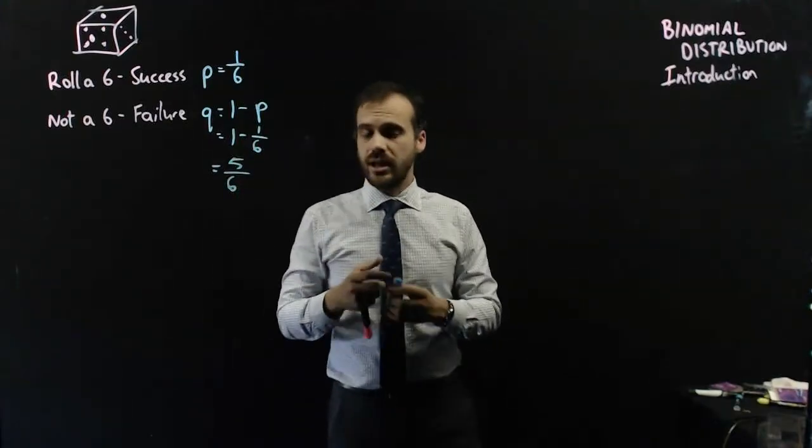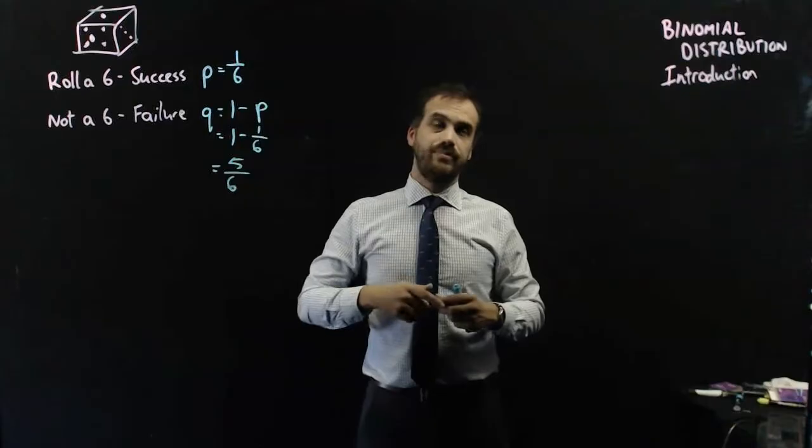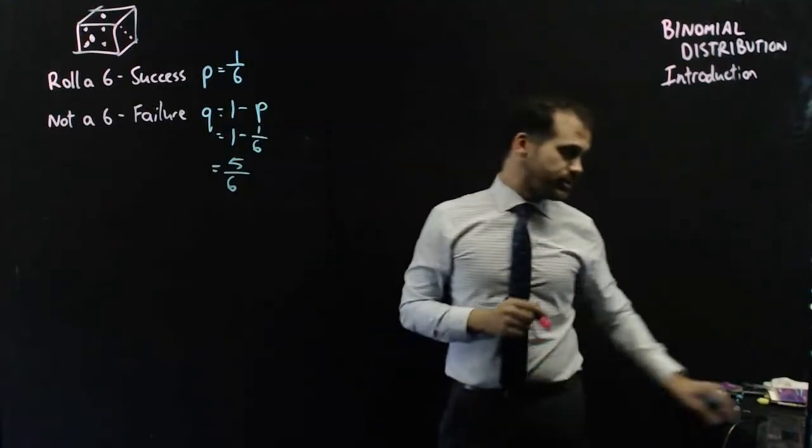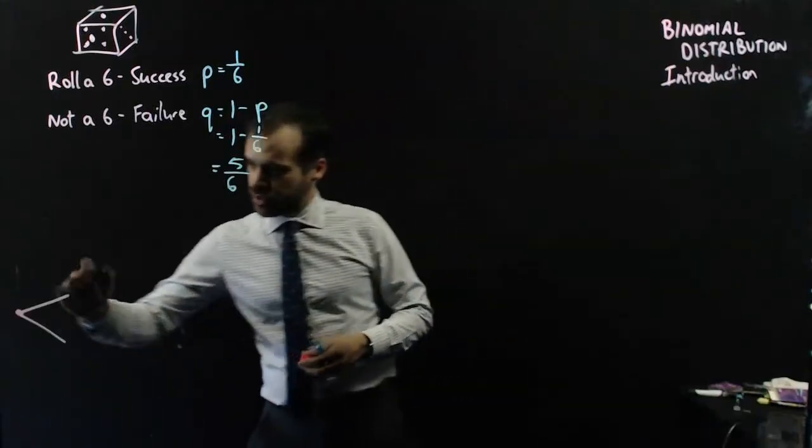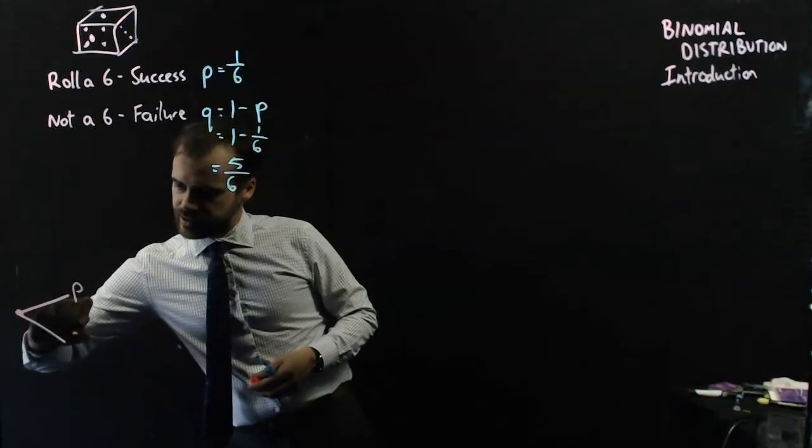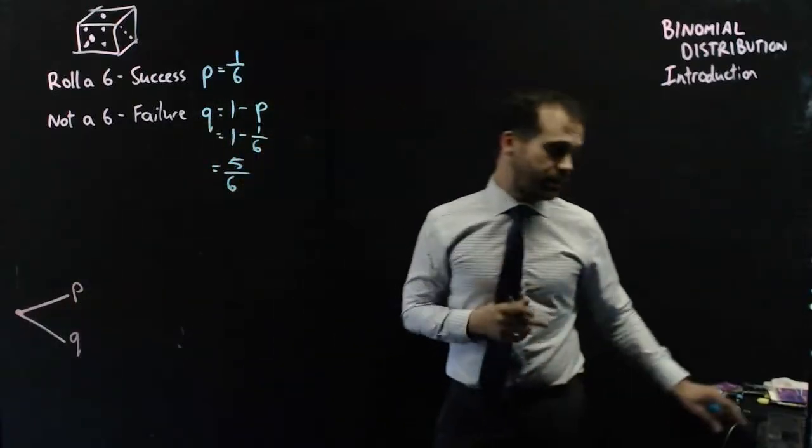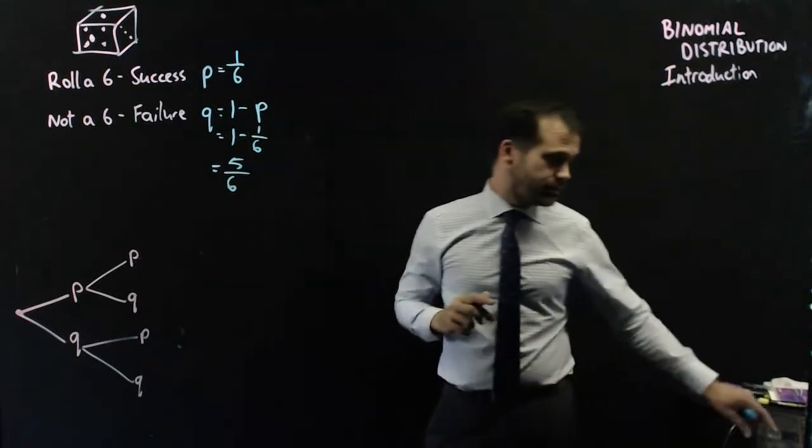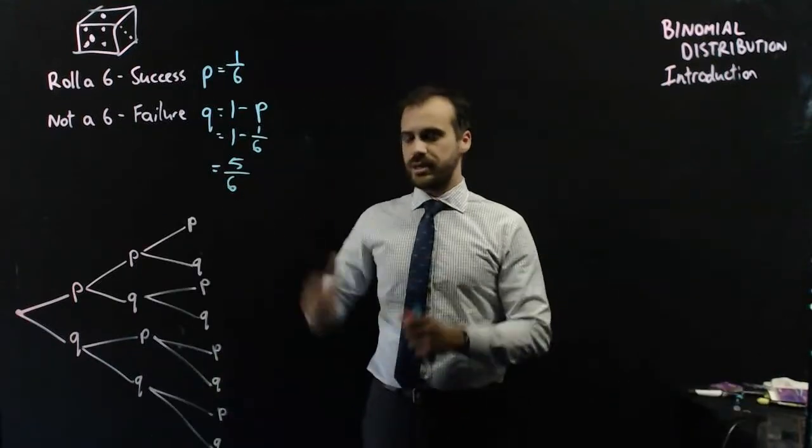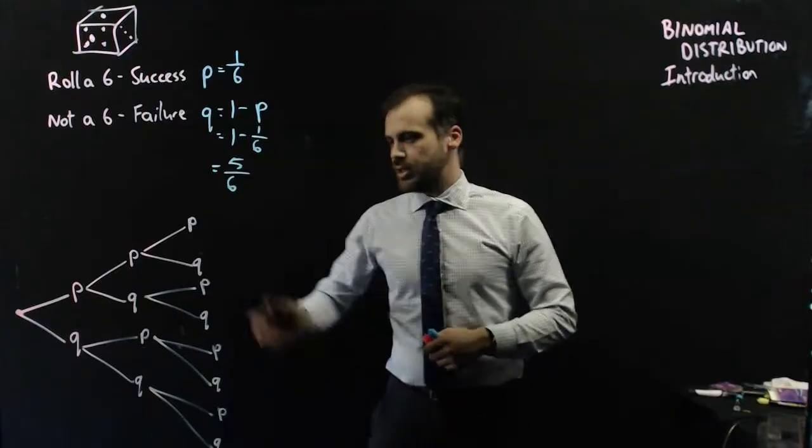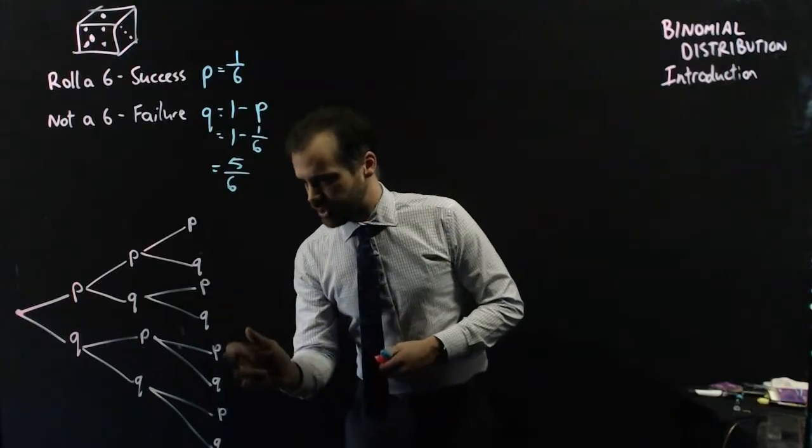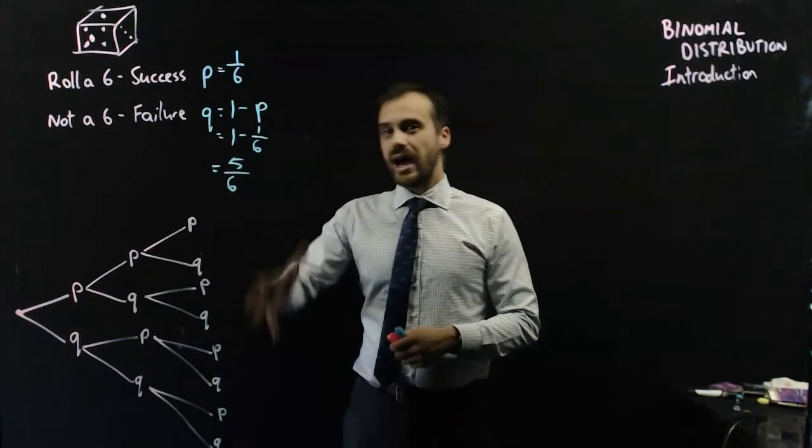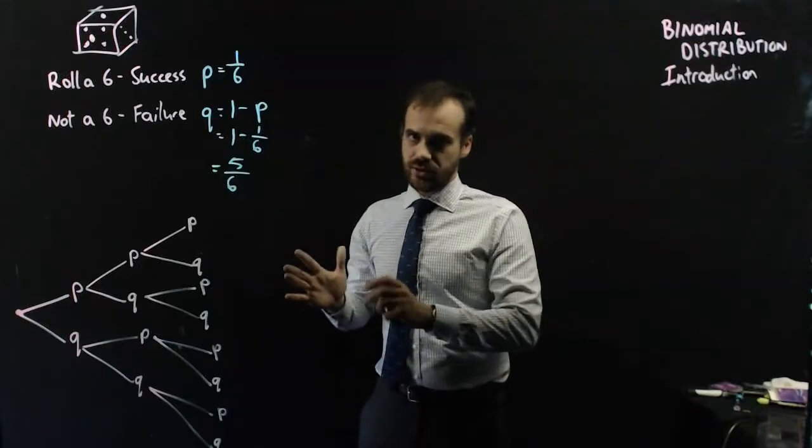We have a nice little Bernoulli sequence set up here. Roll a 6, the probability is 1 in 6. A failure, the probability is 5 in 6. P and Q. Now we're going to roll the dice 3 times. The first roll is obviously going to be a success or a failure, the second roll is going to be a success or a failure, and the third roll is going to be a success or a failure. That means there are 8 different things that can happen.